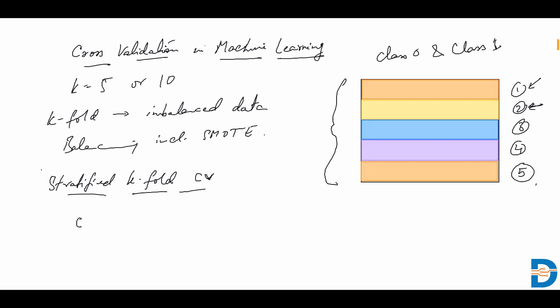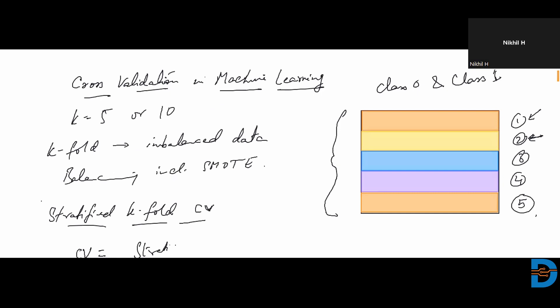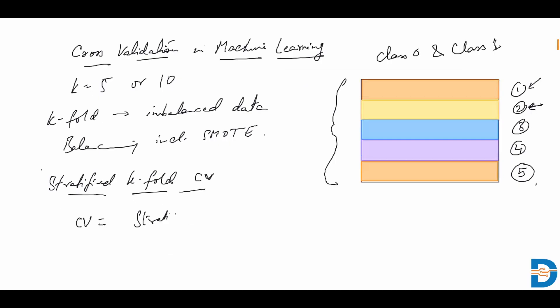And we can give this as cv equals stratified k-fold with the number of splits specified. By default, this would be 5. If we want less or more, we can do that. And this cv value can then be passed on in our grid search CV or randomized CV.